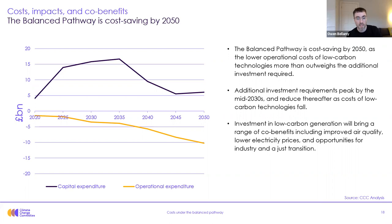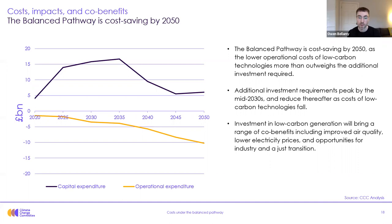In terms of operating costs, because the system is dominated by renewables which have no fuel input costs, running a variable renewable based system is actually cheaper than running a fossil fuel based system. There are therefore large potential savings on the operational cost side, and by 2050 those savings outweigh the additional investment required. So by 2050 the balanced pathway is actually cost saving compared to a high carbon equivalent system — the minus 10 outweighs the plus 5.